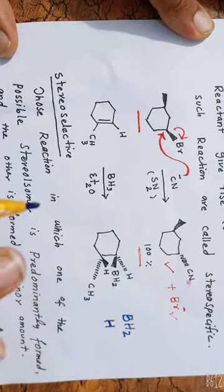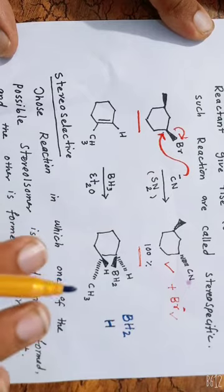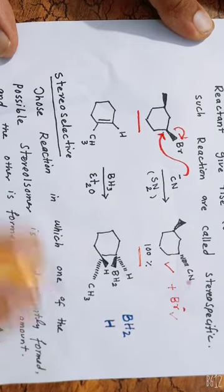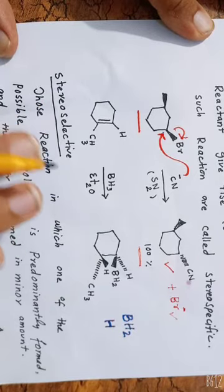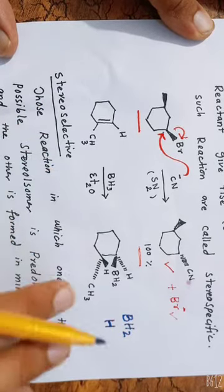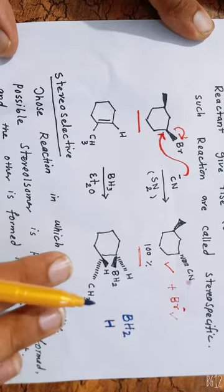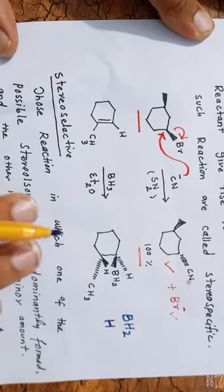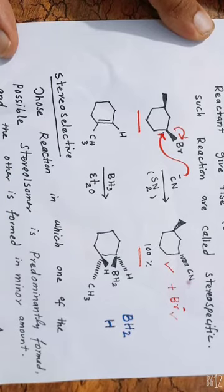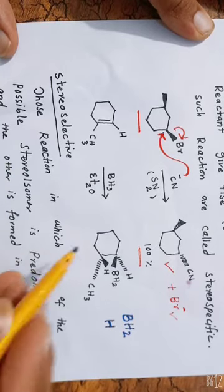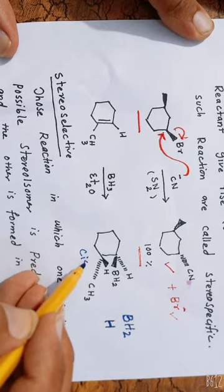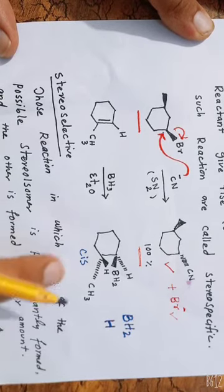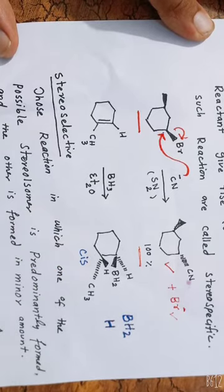Both the hydrogen and the alkyl group are on the back side. Whenever and wherever you carry out hydroboration, it will give you this stereospecific product. The outcome of this reaction is a cis product. You always get a cis product whenever you carry out hydroboration.